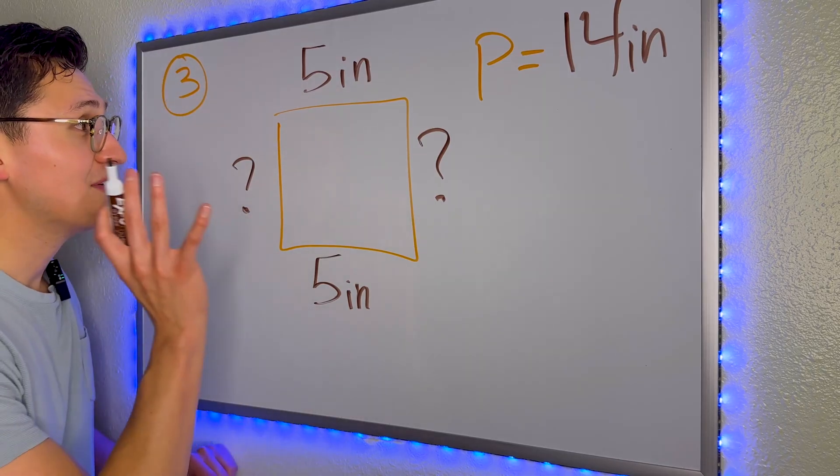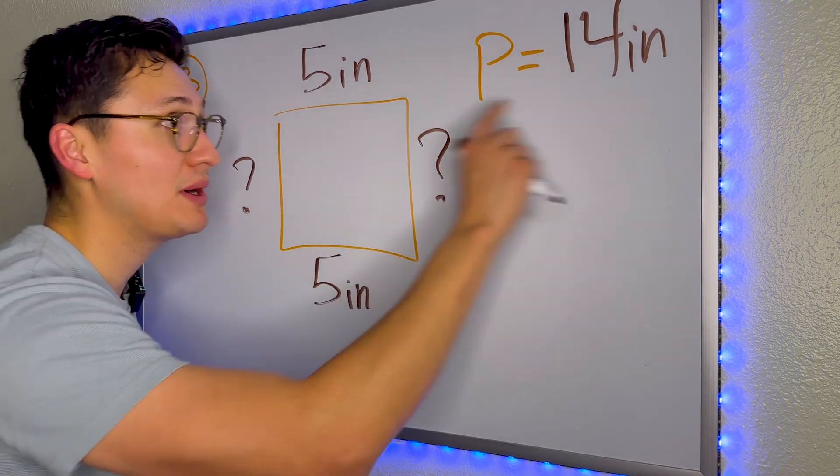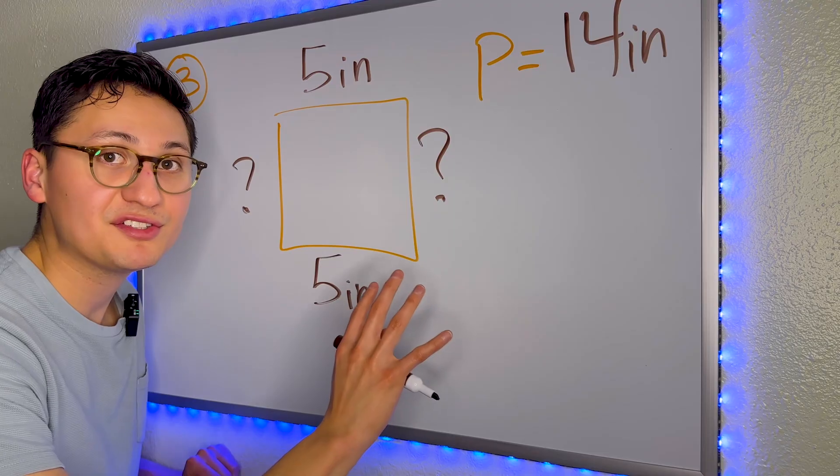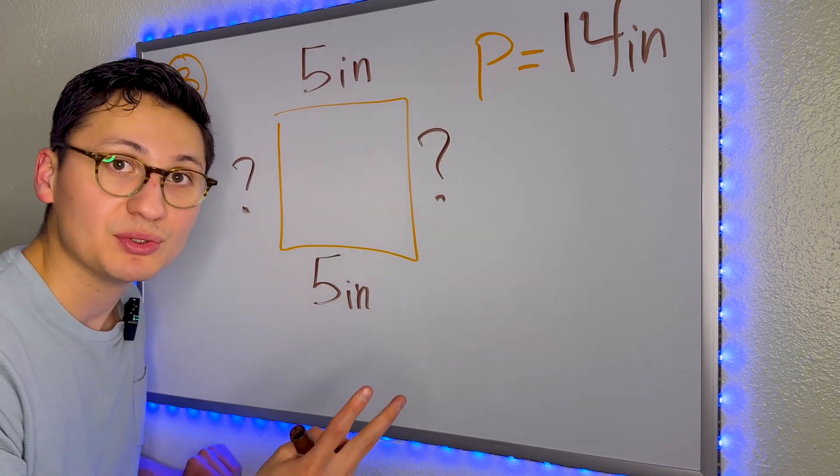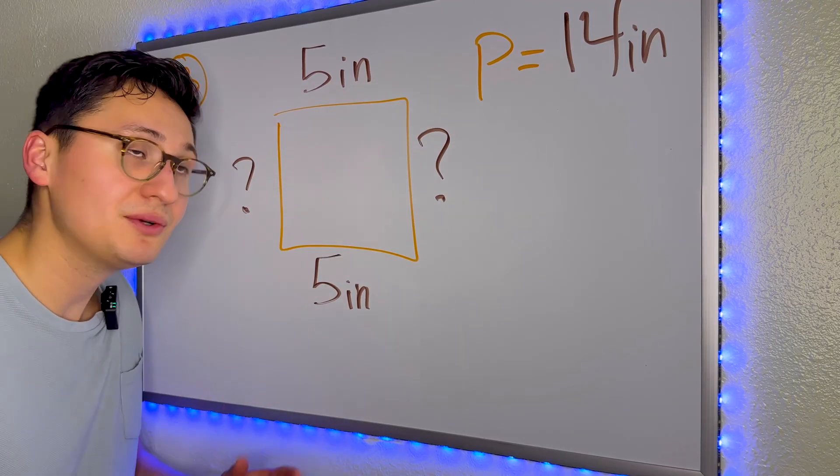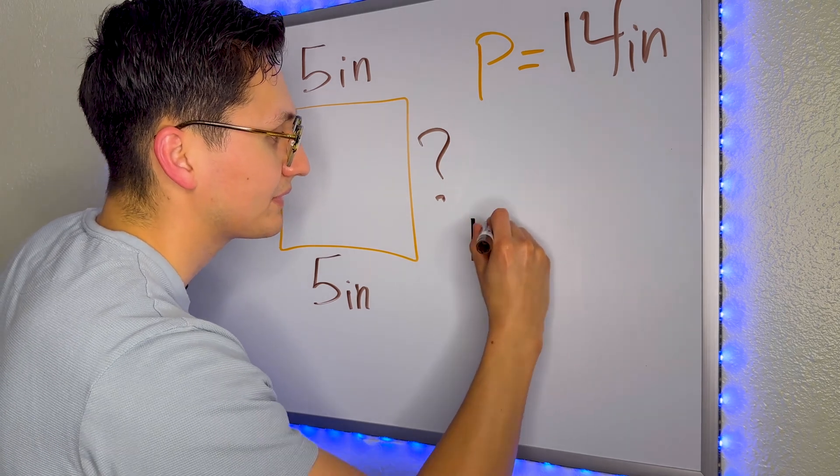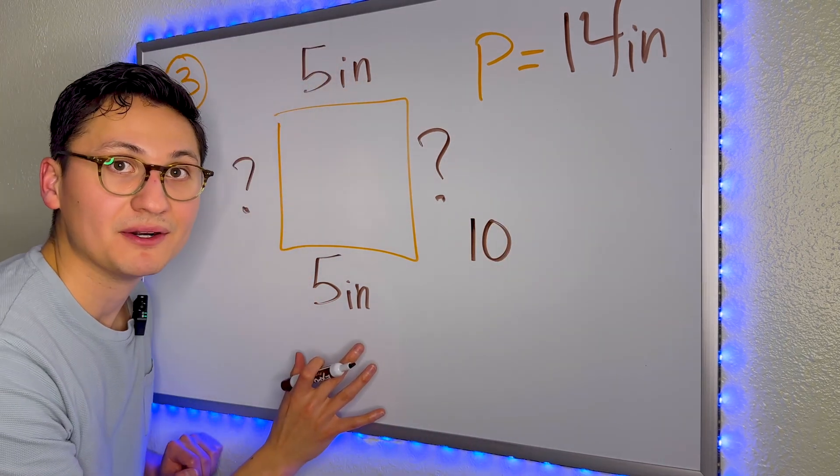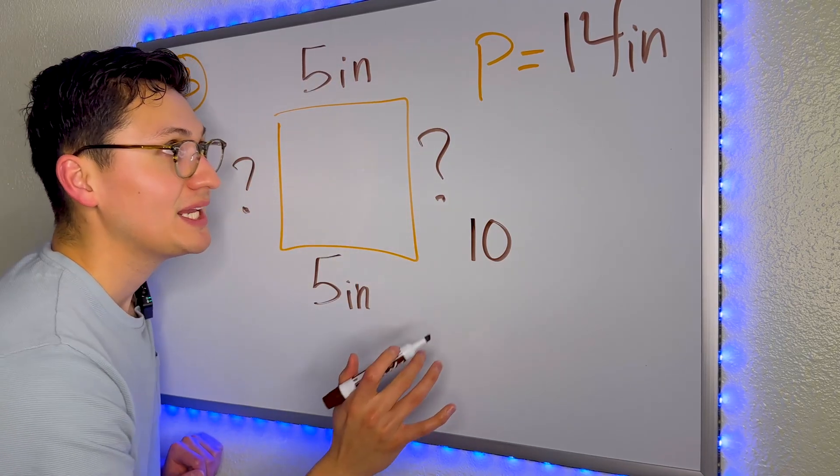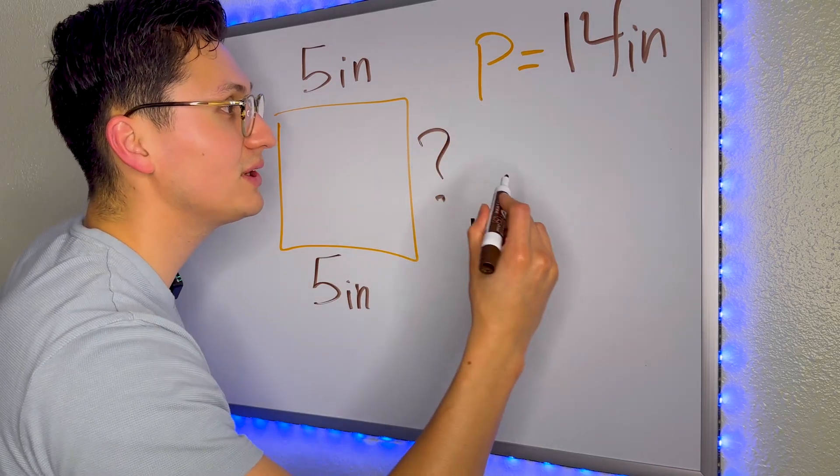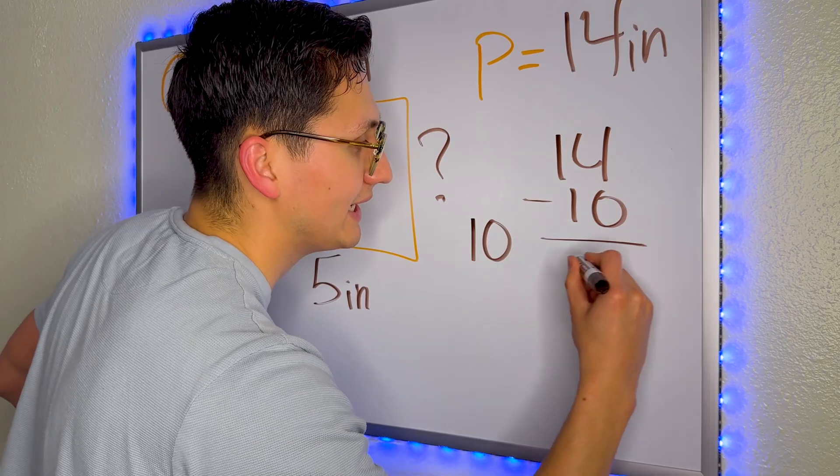So here we have a mysterious shape. They have given us the length of two sides and the perimeter of the entire shape. In order for us to find perimeter, we have to add all the sides, but we only have two. Well, don't worry. What we can do is add five plus five, which is 10. And that will give us half of the perimeter because it's two sides. What we can do with this 10 is subtract it from 14. So we can do 14 minus 10 is 4.